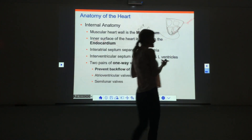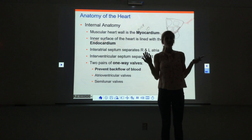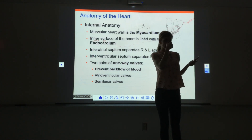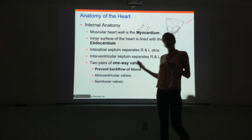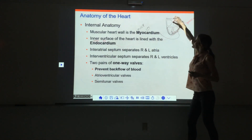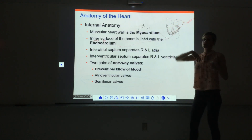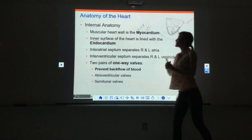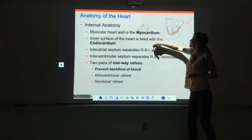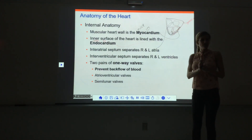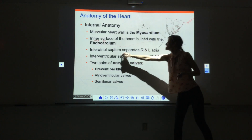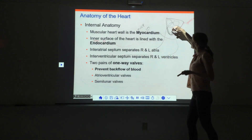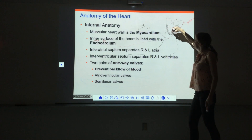We also have a couple of septa — a septum is just a wall or separator, like your nasal septum. We have the interatrial septum, which is the wall separating the right atrium from the left atrium. And then the interventricular septum, which is the muscular wall down below that separates the right ventricle from the left ventricle.